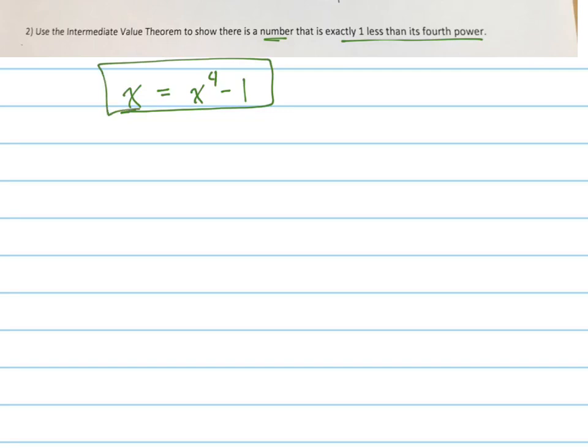Now, you know that if you set that equal to zero, by moving it over, you know that that's a polynomial function, so it's continuous.